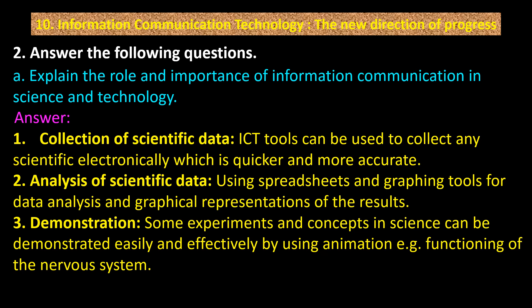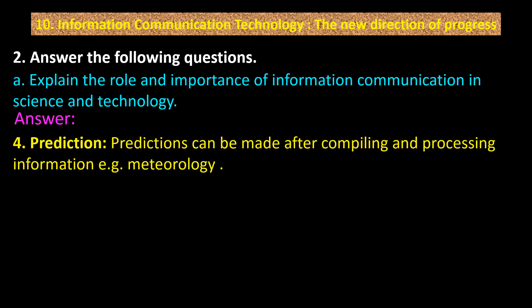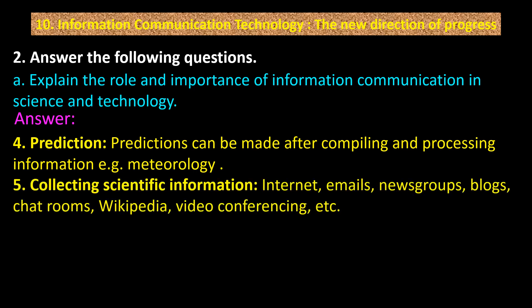Example: functioning of the nervous system. Point 4: Prediction — predictions can be made after compiling and processing information. Example: meteorology. Point 5: Collecting scientific information — internet, emails, news groups, blogs, chat rooms, Wikipedia, video conferencing, etc.